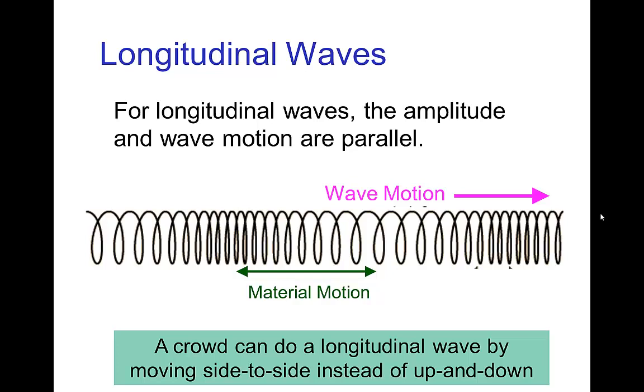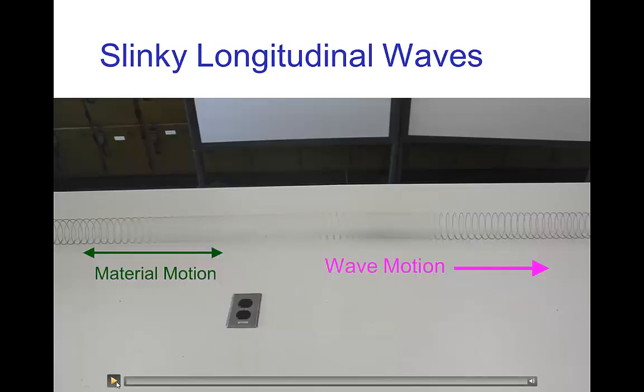A crowd could do this type of wave if instead of standing up and sitting down, they would swing from side to side while sitting in their seats. Here's an example for a slinky creating a longitudinal wave.